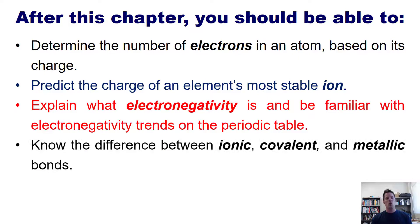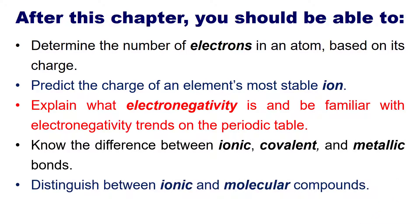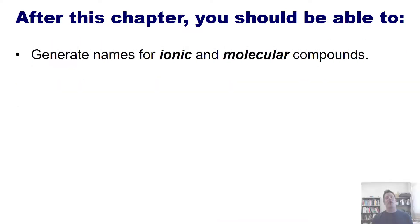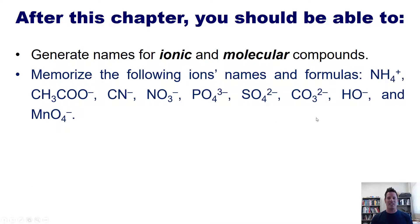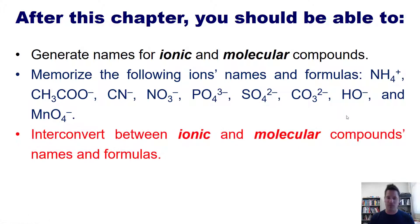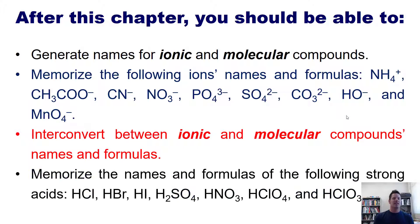Know the difference between ionic, covalent, and metallic bonds. Distinguish between ionic and molecular compounds. Generate empirical formulas for ionic compounds, and generate names for both ionic and molecular compounds. Have memorized the following ions' names, formulas, and charges. Be able to interconvert between ionic and molecular compounds' names and formulas, and have memorized the names and formulas of the following seven strong acids. Long list of things to get to, so let's get started.